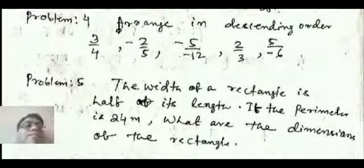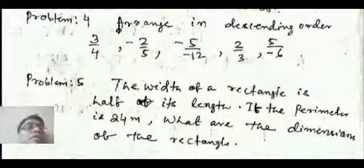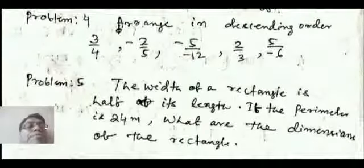Problem 4. Arrange in descending order: 3 by 4, minus 2 by 5, minus 5 by minus 12, 2 by 3, 5 by minus 6.